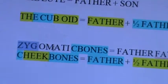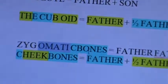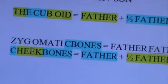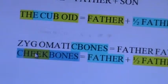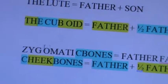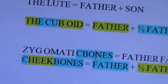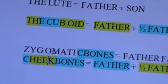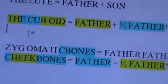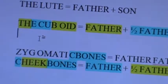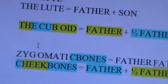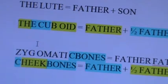Zyg equals father, omate equals father, c-bones equals father. And then cheekbones, as they are commonly called, is father plus half a father — perfectly half the value of zygomatic bones. There you go. Glory to God. Glory to the Father. Amazing.